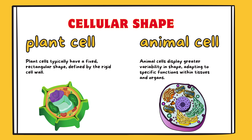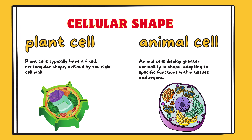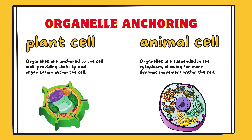Cellular shape. Plant cell: plant cells typically have a fixed, rectangular shape, defined by the rigid cell wall. Animal cell: animal cells display greater variability in shape, adapting to specific functions within tissues and organs. Organelle anchoring. Plant cell: organelles are anchored to the cell wall, providing stability and organization within the cell. Animal cell: organelles are suspended in the cytoplasm, allowing for more dynamic movement within the cell.